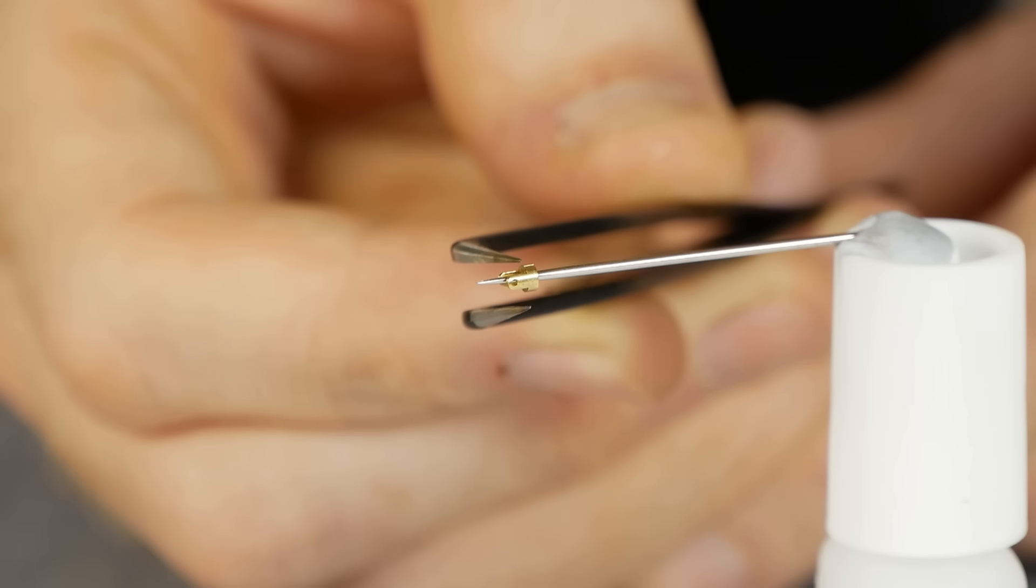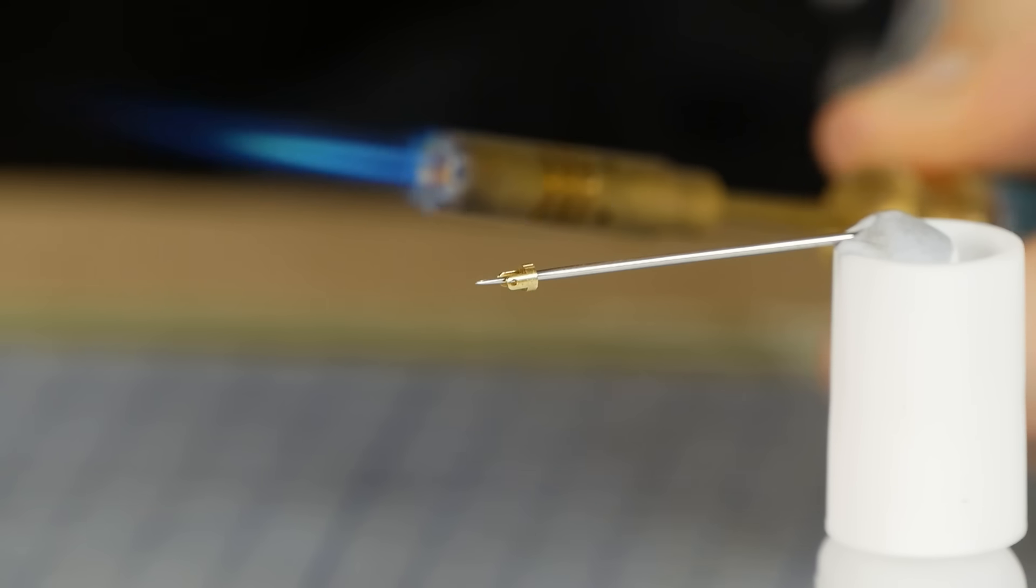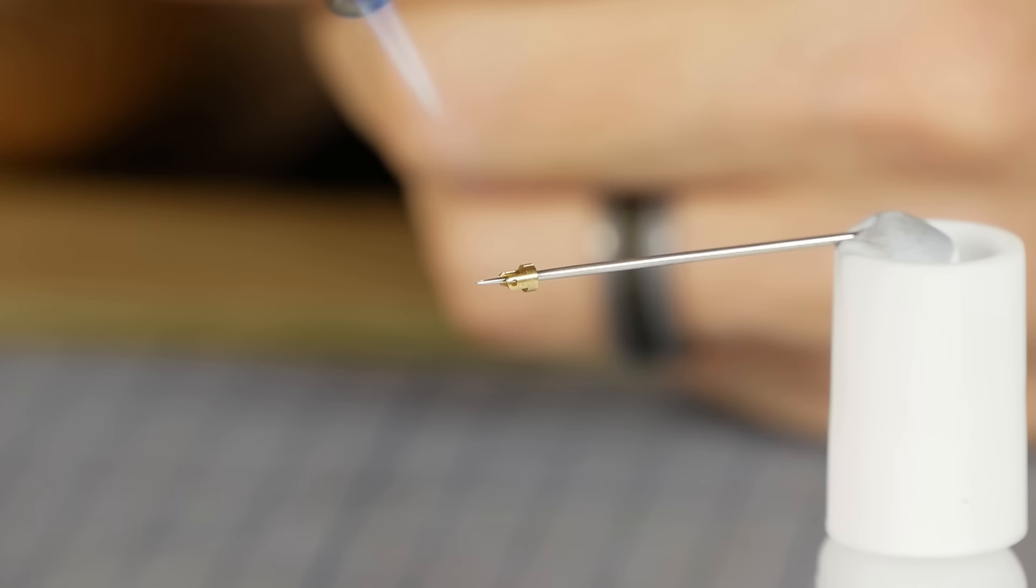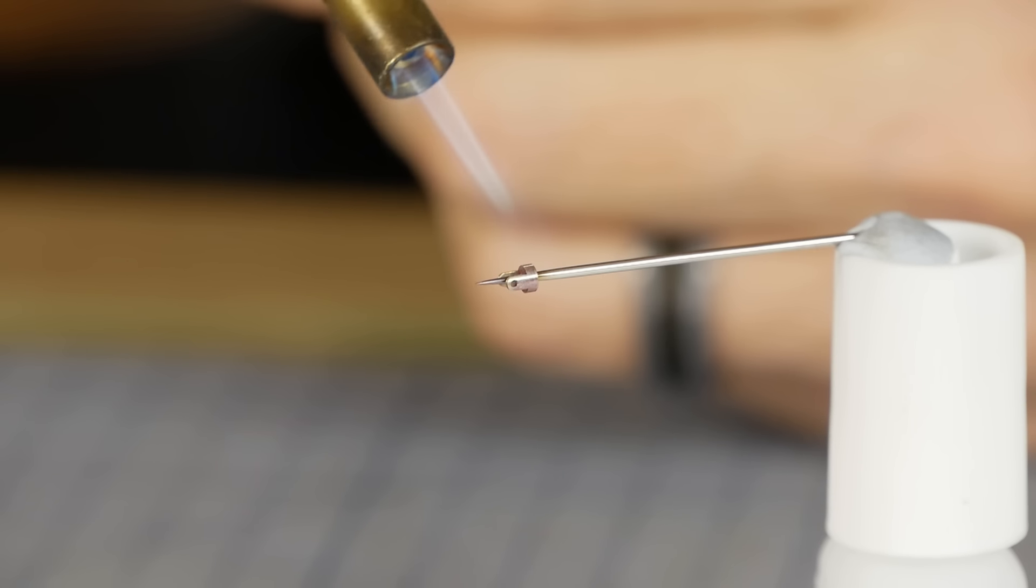Because these brass joints need to be bent, we'll need to anneal the brass. This will soften the brass and prevent it from cracking as we bend it. The annealing process is achieved by heating the brass until it glows a dull orange and then let it cool down.